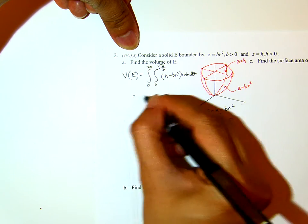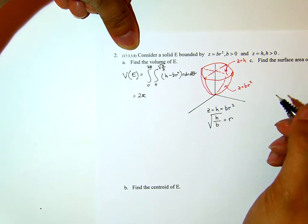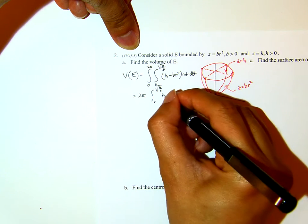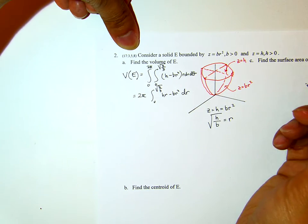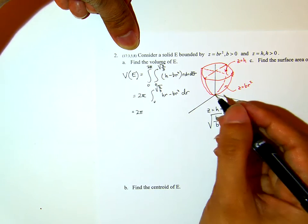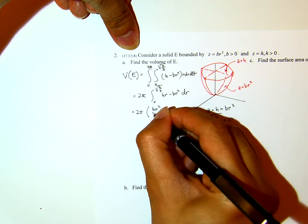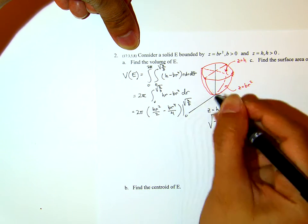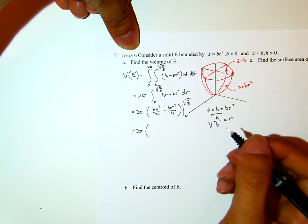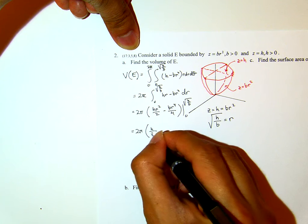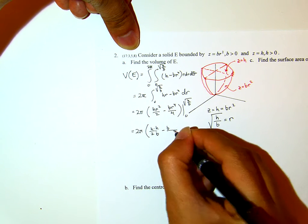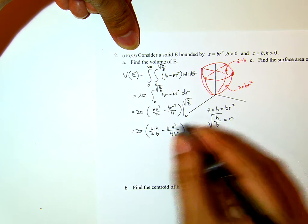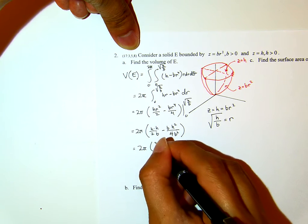And the height will be H minus Br squared, r dr dθ. Then because it is independent of theta, I pull the 2π out, and then inside I have this integral from 0 to the square root of H over B, H r minus Br cubed dr.